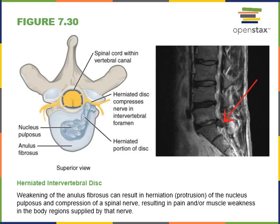A herniated intervertebral disc, or slipped disc, occurs when the nucleus pulposus — the gelatinous inner portion of the intervertebral disc — ruptures through the fibrocartilage of the annulus fibrosis. This slipped disc can compress a nerve in the intervertebral foramen, leading to excruciating pain and loss of function for the muscles served by that nerve. Slipped discs are more common in the lumbar region, where greater body weight forces press on the intervertebral disc and the disc can wear out over time.